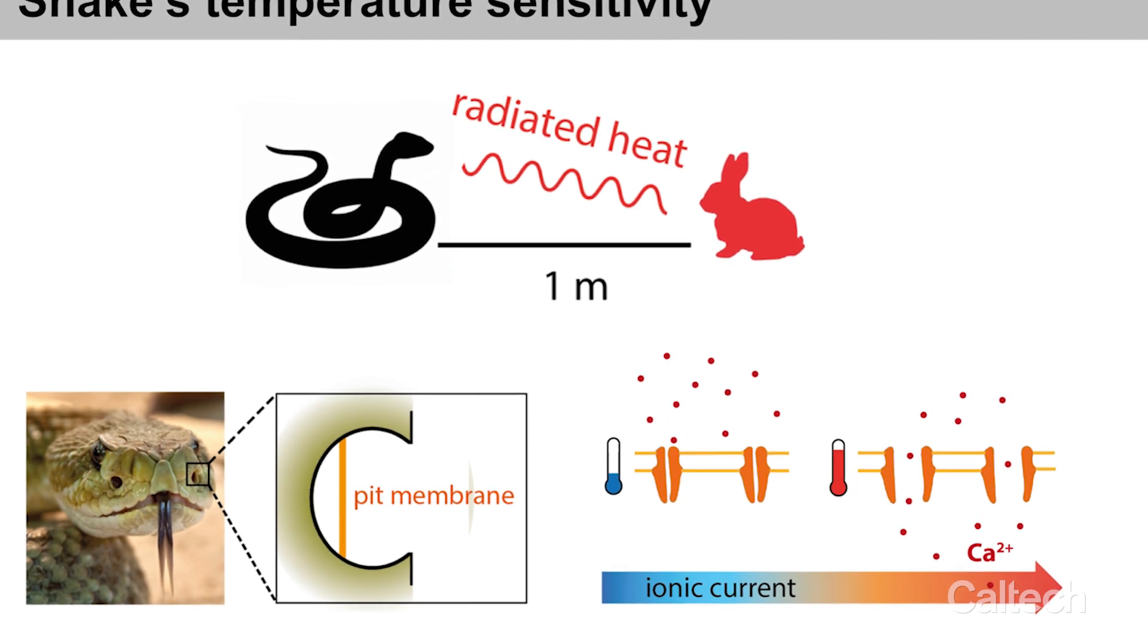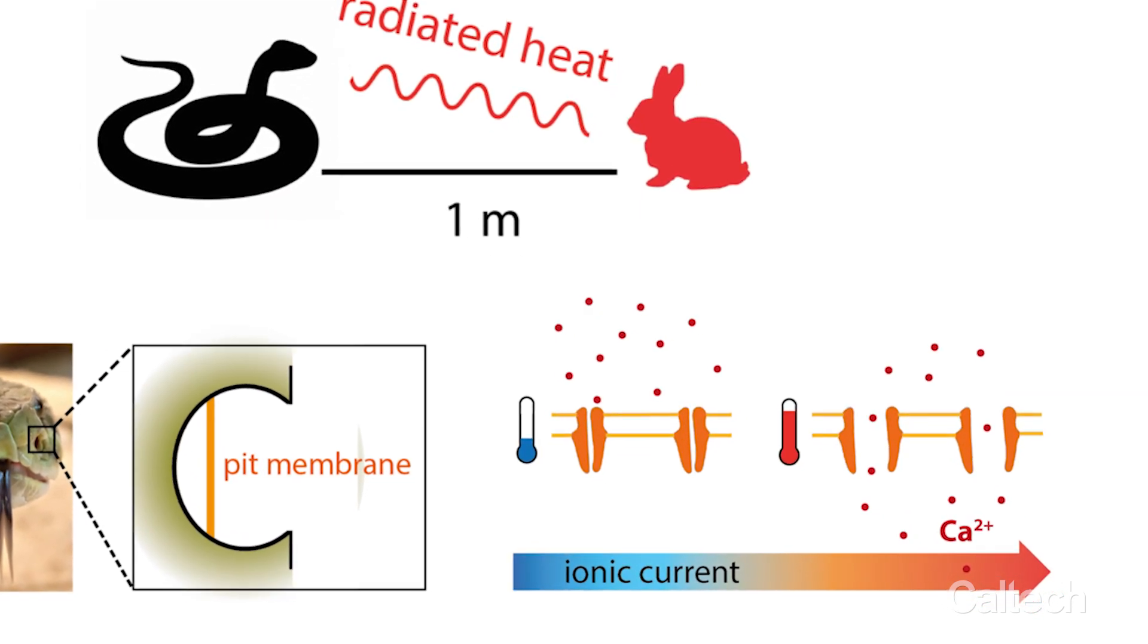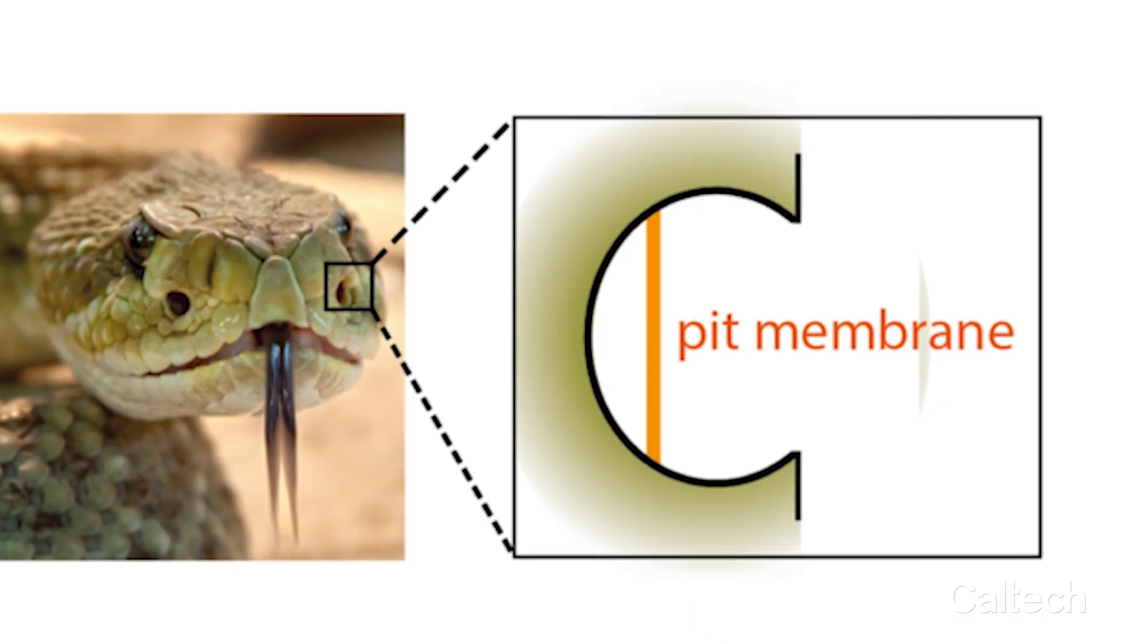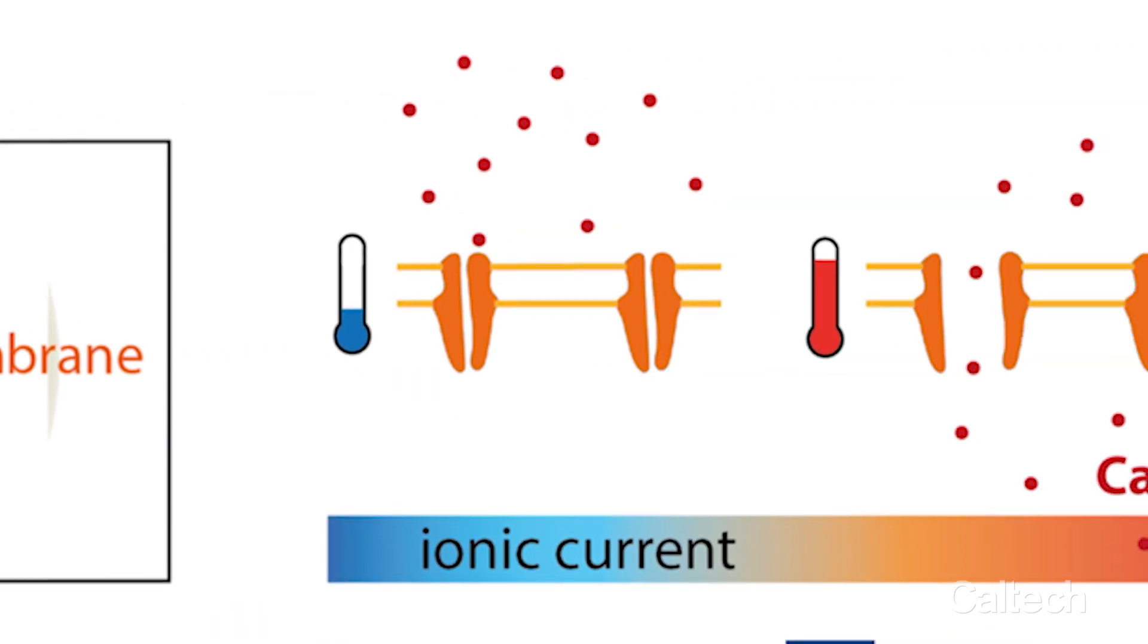This membrane is nothing else than an organic layer. It has receptors which are effectively ion channels that can open when temperature increases, allowing calcium ions to pass through and communicate with the neural systems and the brain of the snake.